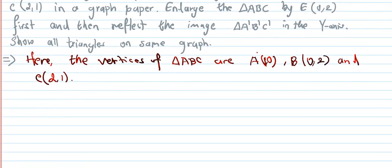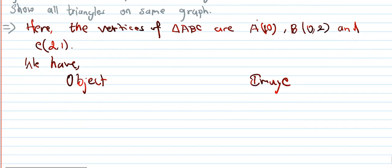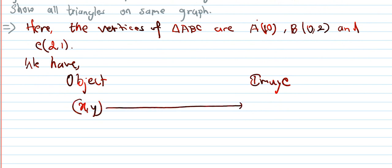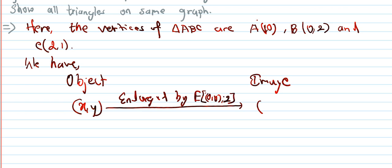First of all, enlargement. We have object (x,y). Enlargement about center (0,0) with scale factor 2 gives image (2x, 2y). So A(1,0) maps to A-dash (2,0). B(0,2) maps to B-dash (0,4). C(2,1) maps to C-dash (4,2).